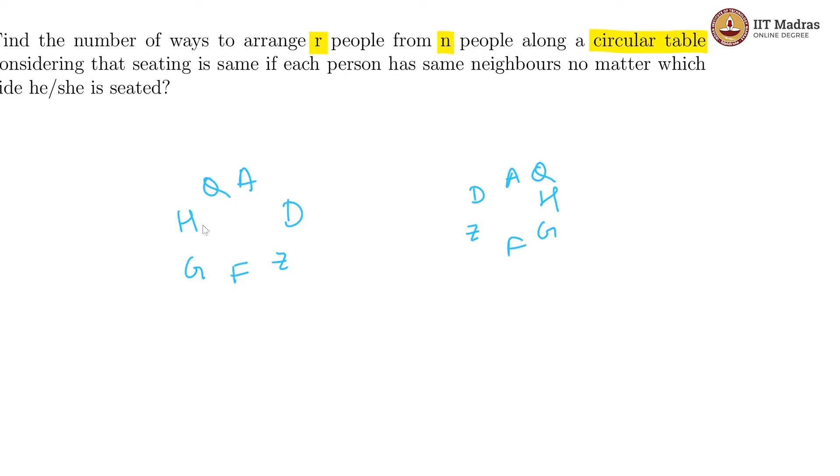So, here also Q and D. H has the same neighbors Q and G. Similarly, F has G and Z and F has G and Z. So, what has happened here is this is clockwise and this is anti-clockwise and they both are supposed to be considered the same.